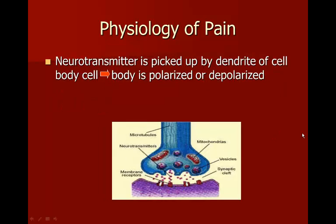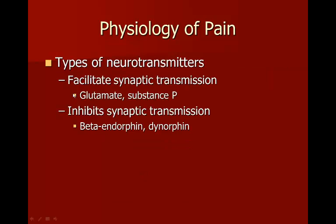The neurotransmitter is picked up by the dendrite of the cell body, and the body is polarized or depolarized. The neurotransmitters that facilitate or continue the action potential are glutamate and substance P. The neurotransmitters that inhibit synaptic transmission are beta-endorphin and dynorphin.